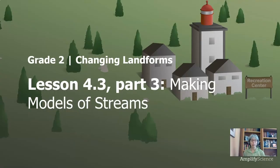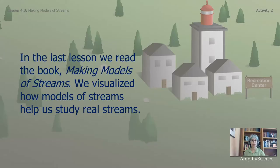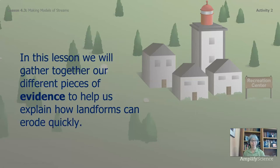Hi everyone. Welcome back to part three of the third lesson in chapter four, Changing Landforms. We're continuing to make sense of models of streams. In the last lesson, we read the book Making Models of Streams. We visualized how models of streams help us to study the real ones. In this lesson, we will gather together our different pieces of evidence to help us explain how landforms can erode quickly.